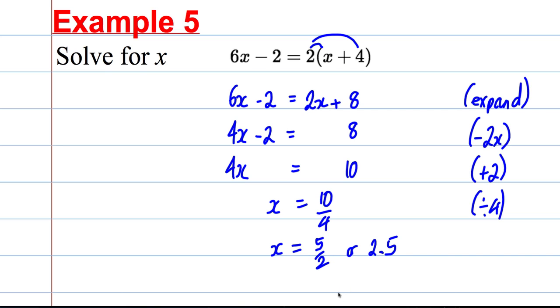Now let's check this is actually true. 6 times 2.5 is 15. 15 take away 2 is 13 and in this bracket 2.5 plus 4 is 6.5. 2 times 6.5 is 13. Yes our checks worked out, all correct.